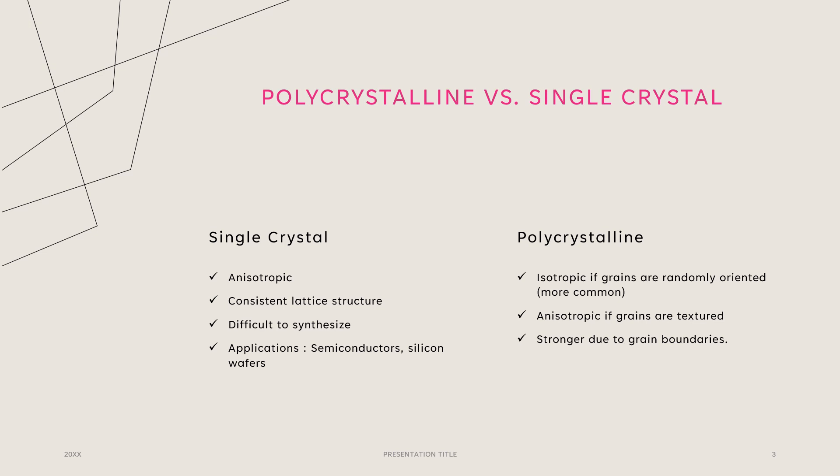What's the difference between a polycrystalline material versus a single crystal or monocrystalline material? A monocrystalline material is anisotropic, meaning that the properties vary depending on the direction you measure them — depending on the Miller indices of measurement. They have a consistent lattice structure and are difficult to synthesize because it requires the crystal growth of a single nuclei.